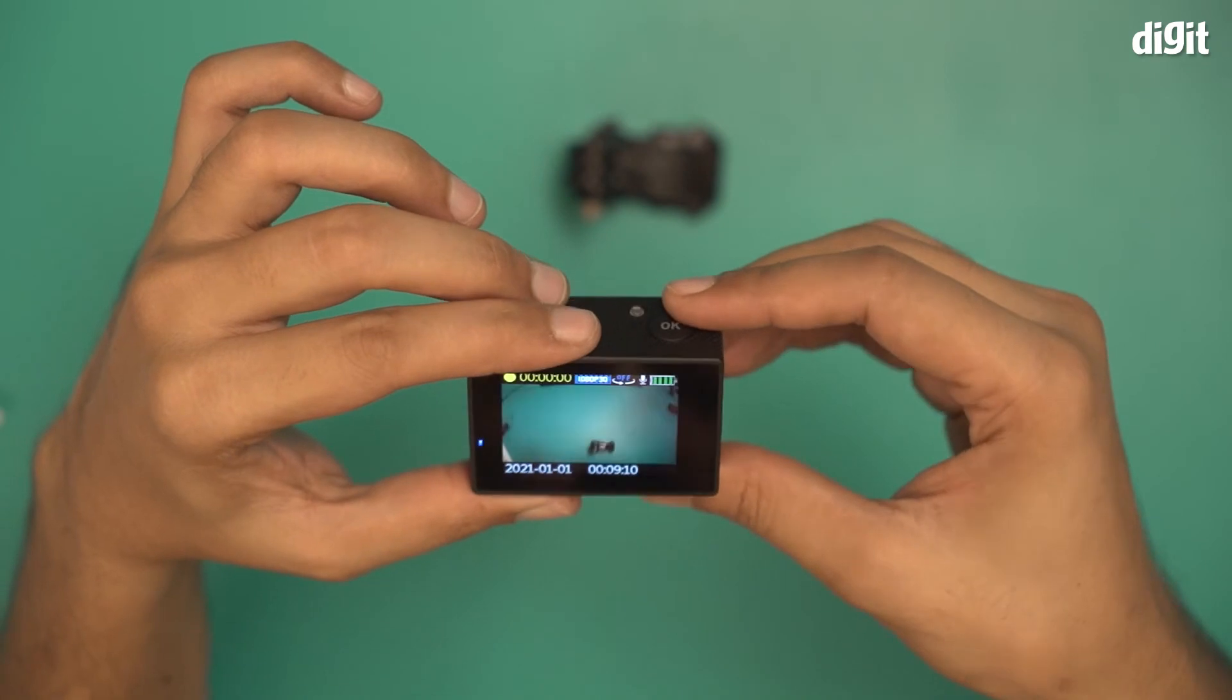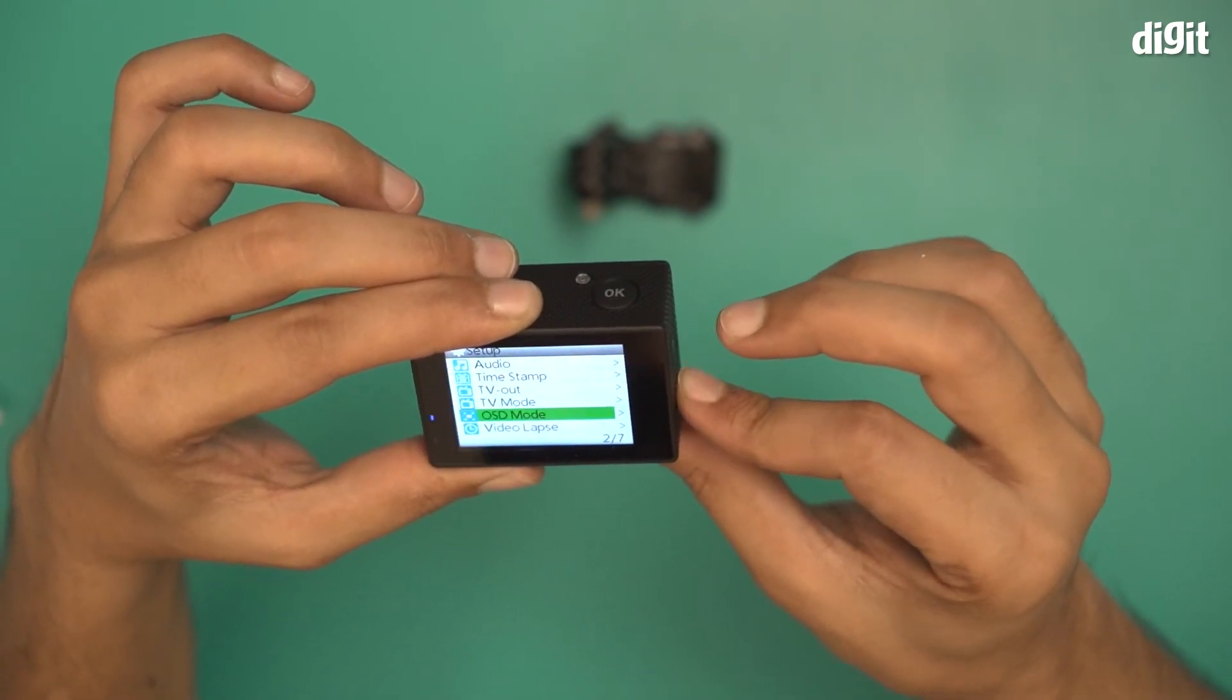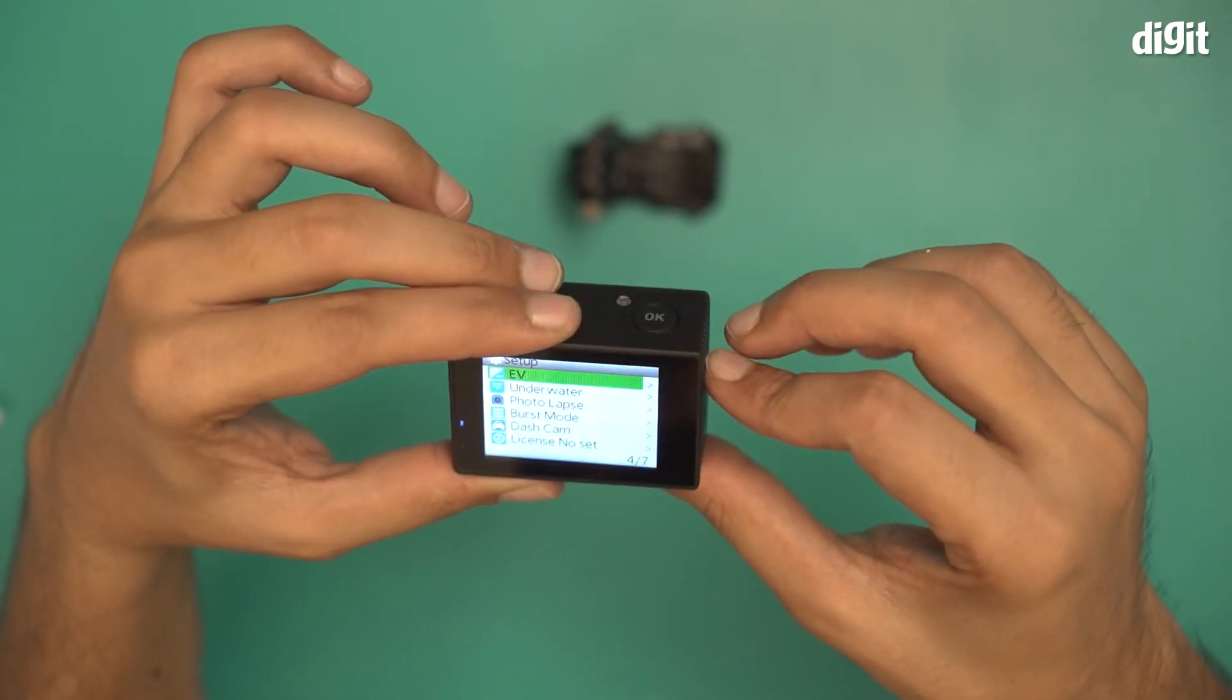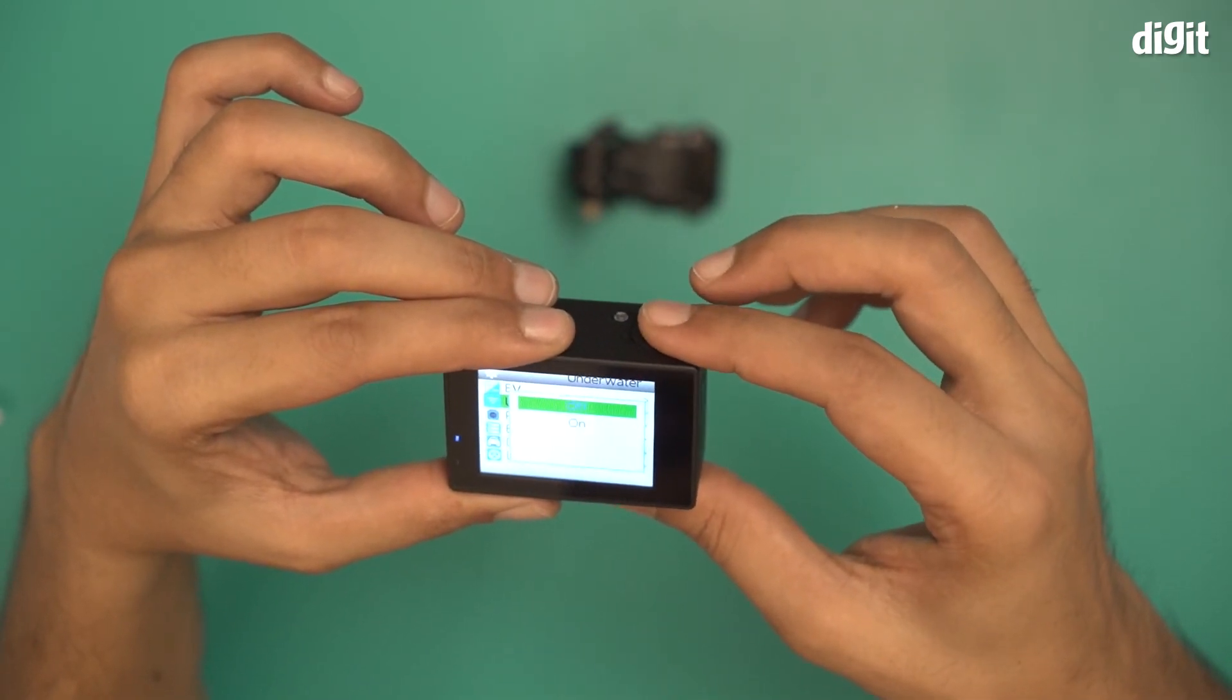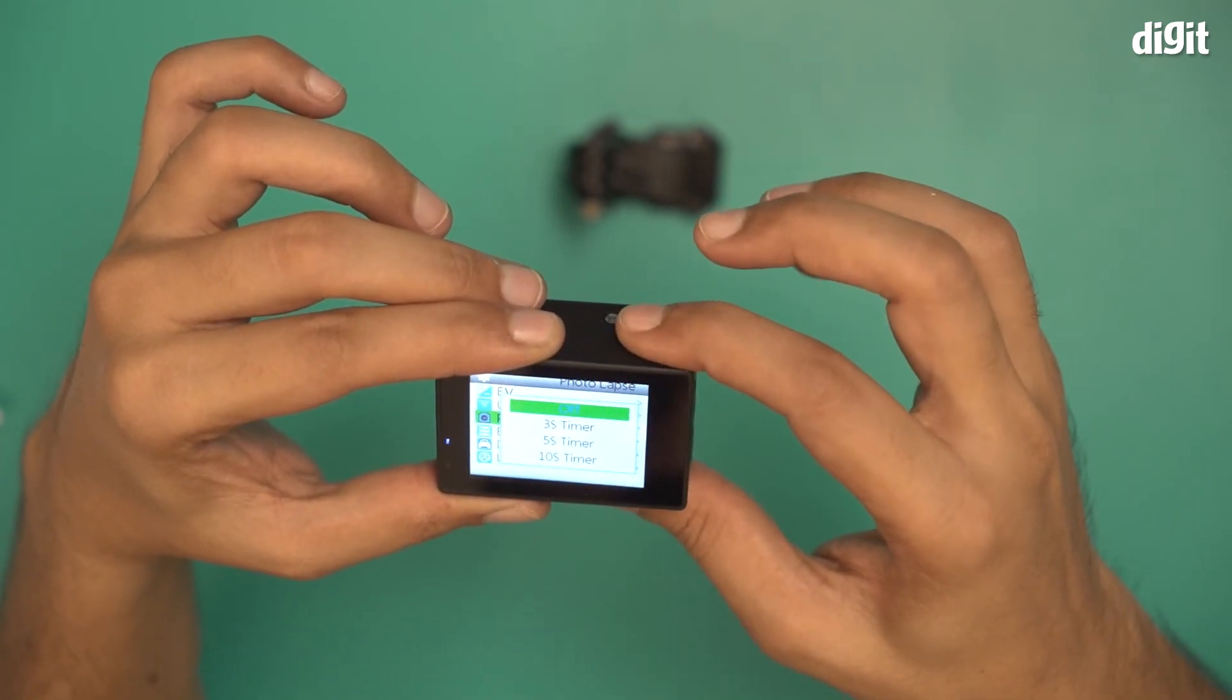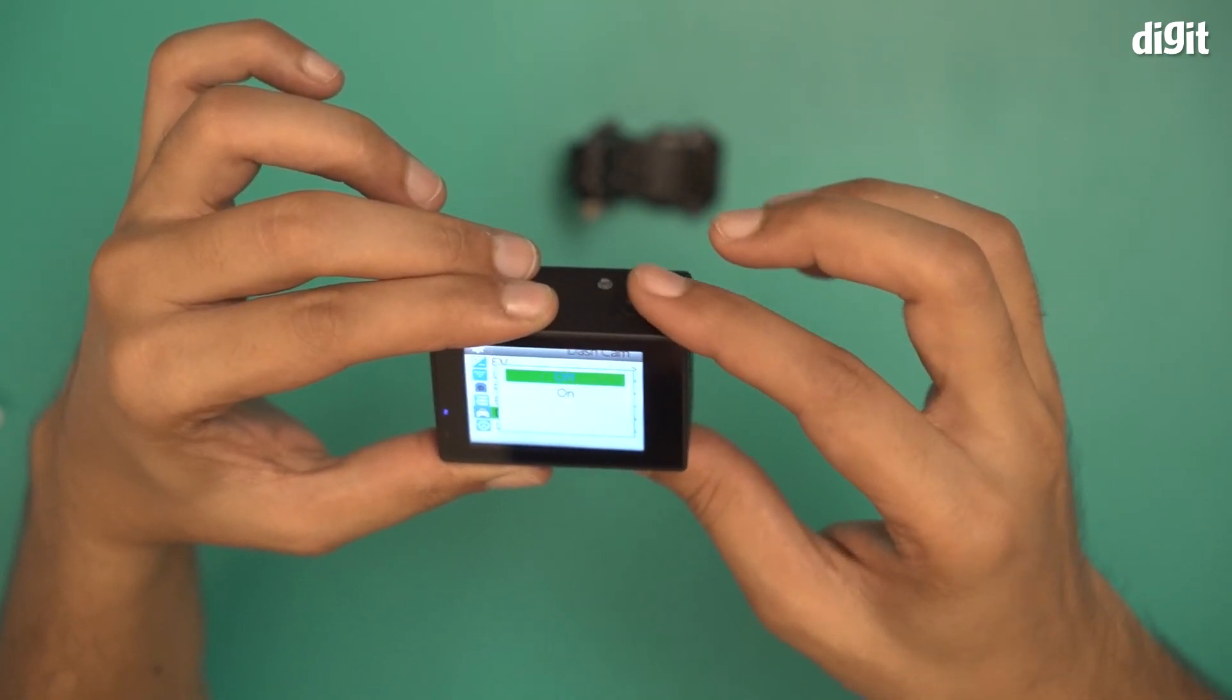Do we have anything else? Color, ISO—you can change the ISO as well. A lot of options here. There's an EV option, the underwater shooting option which is off right now, and there's also a photo lapse option with a three-second burst, five-second burst, and ten-second burst. There's also an additional burst mode, and a dash cam mode for when you want to use it with a car.